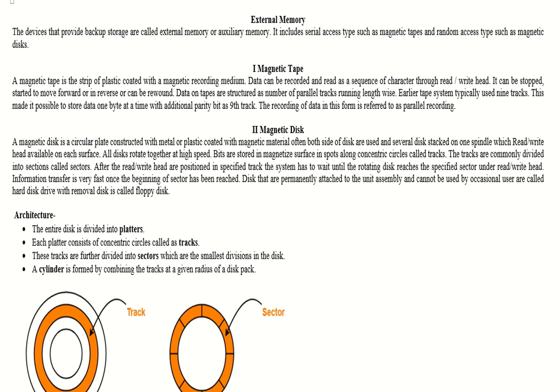Welcome. In this video today we are going to discuss about external memory. As we have studied in the previous video, we learned about internal memory. Today we will study what is external memory. The devices that provide backup storage are called external memory and auxiliary memory, providing permanently stored backup. It includes serial access type such as magnetic tape and random access type such as magnetic disk.